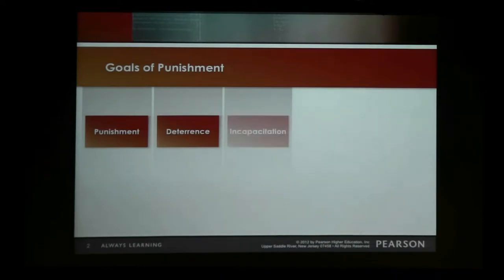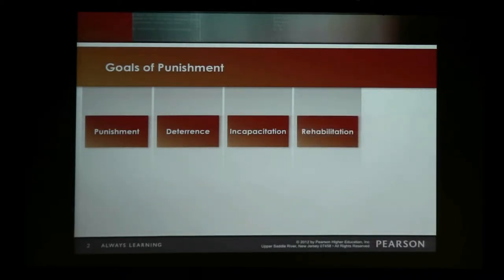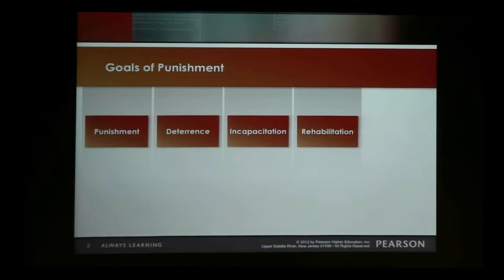We also punish people for incapacitation, which has to do with protecting society — we want to eliminate or significantly reduce someone's ability to further harm someone else. The ultimate form of incapacitation is capital punishment. We also punish people for rehabilitation. There's presumably something wrong with a person, and part of our goals is we want to fix them. This is debatable in terms of how much we actually see in our prison system today, but it's still listed as a goal.